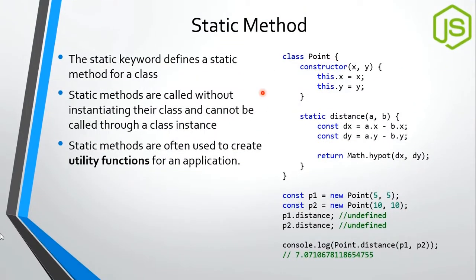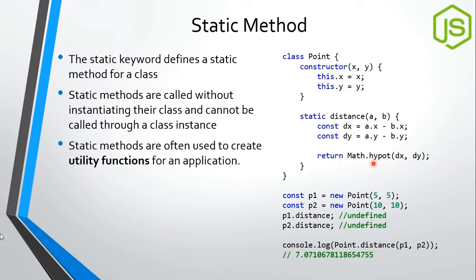We can define static methods with ES6 classes using the static keyword before the method name. Static methods are called directly with the class name, not through object instances — they are utility functions. For example, JavaScript's built-in Math class uses static methods that can be called directly without creating instances. Static methods don't need instance properties or instance variables.